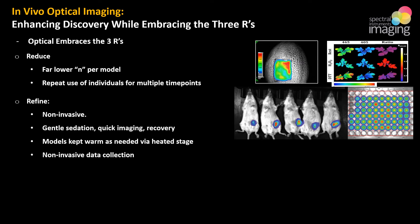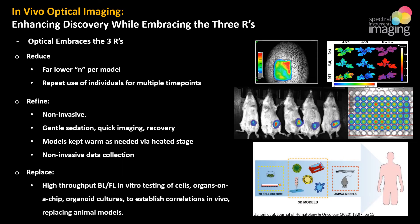Refinement: optical imaging is non-invasive. Animals are anesthetized quickly, imaged quickly, recover quickly, and are kept warm during imaging. The refinements function to reduce stress and remove discomfort from research animals. And replacement: deceased ex vivo tissues can be used for infectious studies, as can plants, roots, vegetables, cells, organs on a chip, organoids, and even 3D bioprinted tissues. As these options hopefully become more reliable as stand-ins for animal models and for translational data, they can be imaged easily in optical systems.